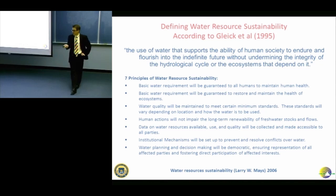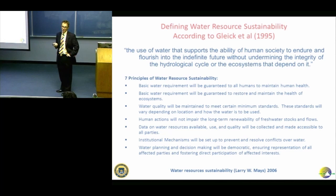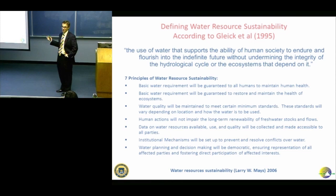Principle five is sustainability for water engineers: data on water resources available, use, and quality will be collected and made accessible to all parties. The idea is that where the water is, how it's used, and what its quality is — that's a public good. Since we all need water to live, that actually makes sense.